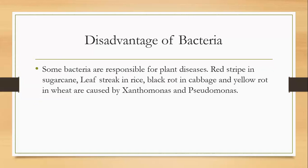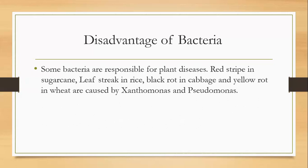Another disadvantage is that some bacteria are responsible for plant diseases, such as leaf stripe in sugarcane, leaf streak in rice, black rot in cabbage, and yellow rot in wheat. These are caused by Xanthomonas and Pseudomonas.